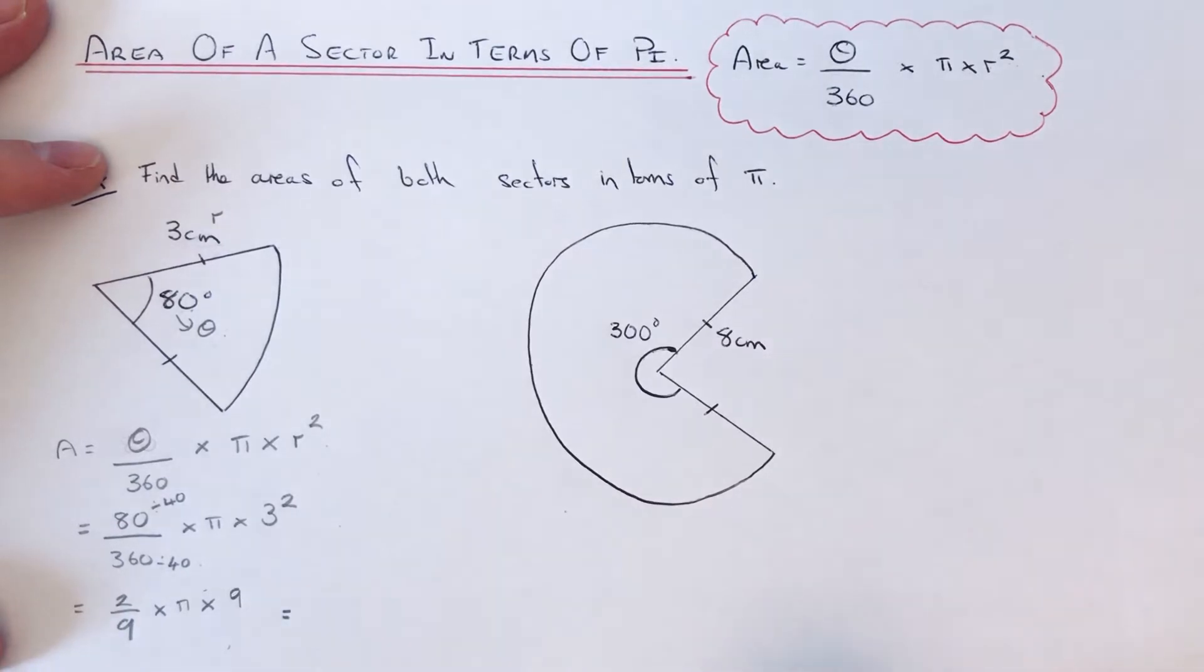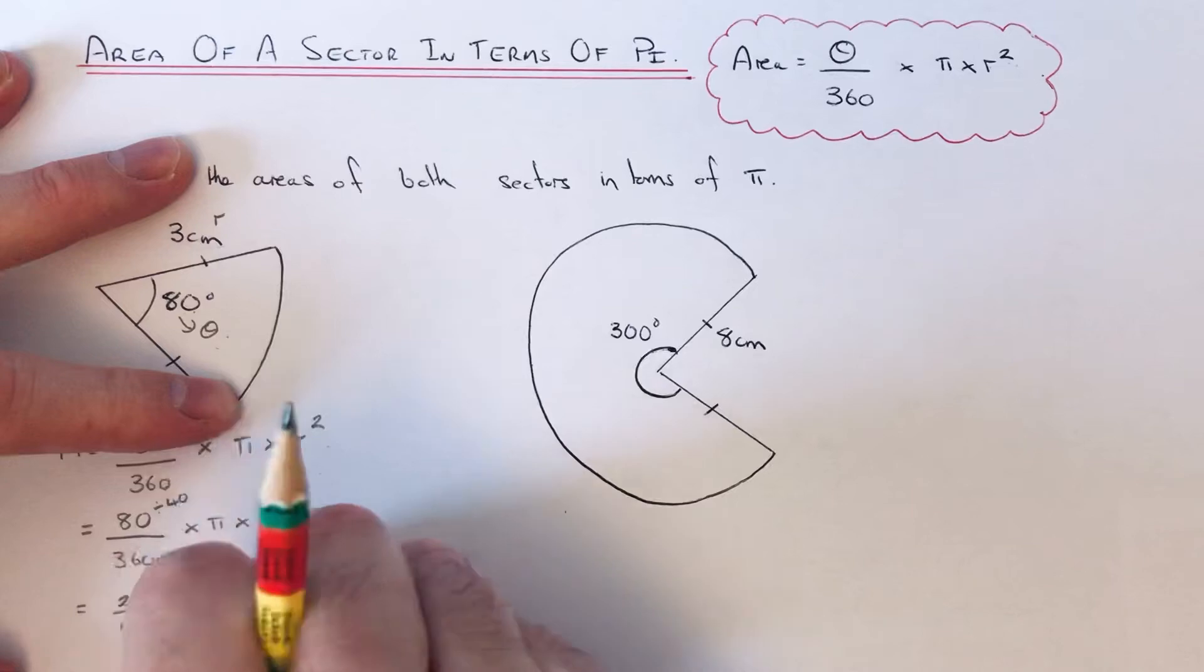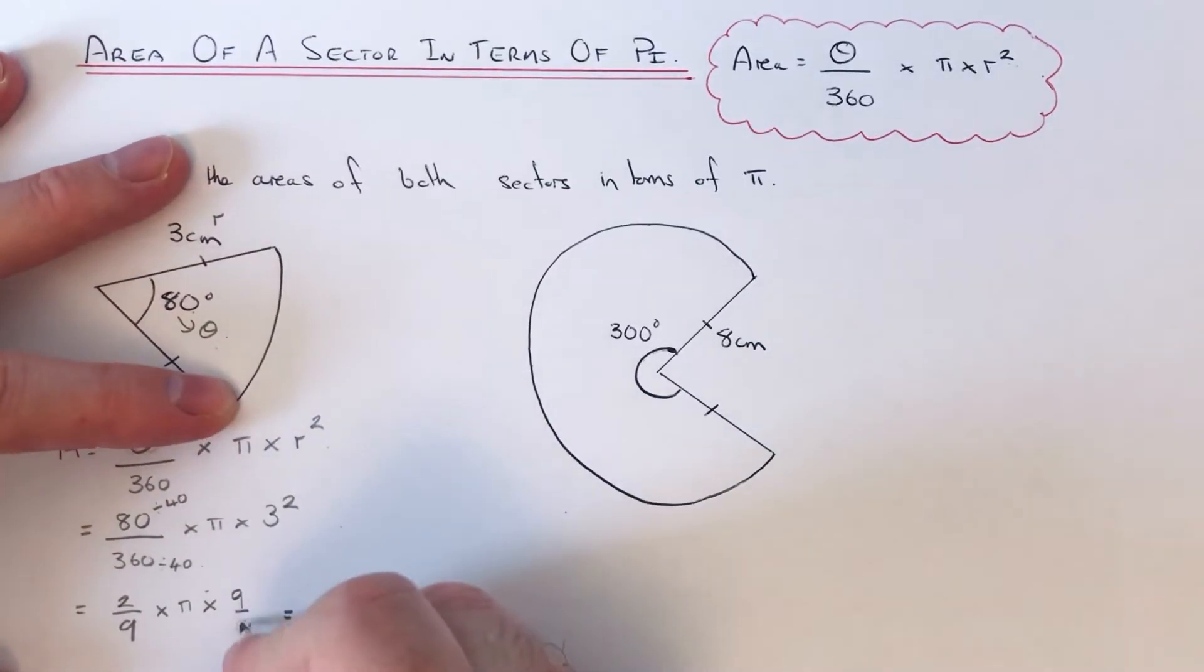And then all we need to do now is simplify this. What we can do is multiply 2 ninths by 9. We can write 9 as 9 over 1.